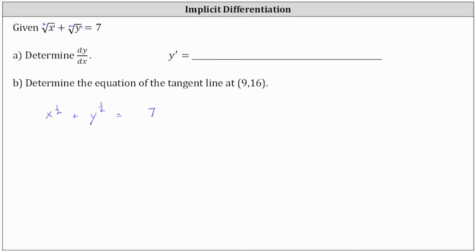The next step is to differentiate both sides of the equation with respect to x. When differentiating with respect to x, if the term is an x term, we differentiate like we normally do. If we're differentiating a y term with respect to x, we need to apply the chain rule, and therefore we differentiate with respect to y, then multiply by dy/dx.